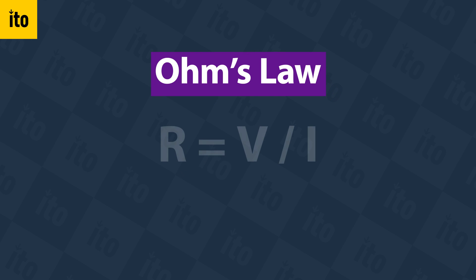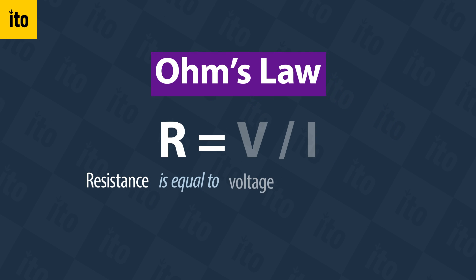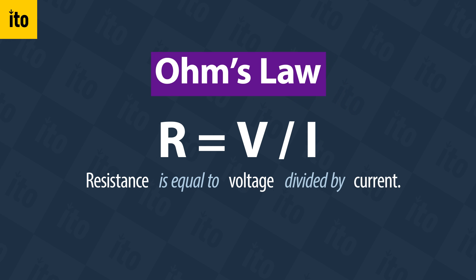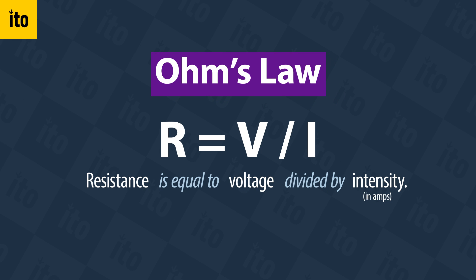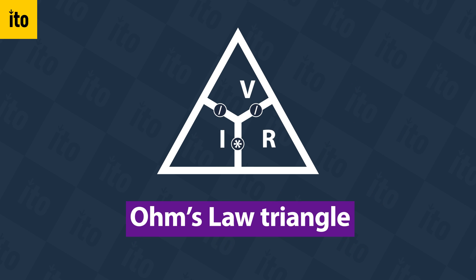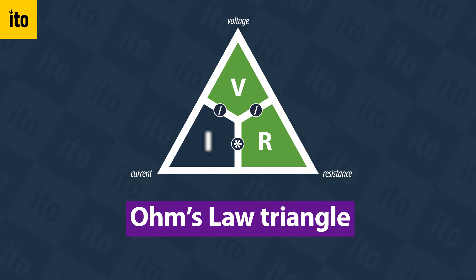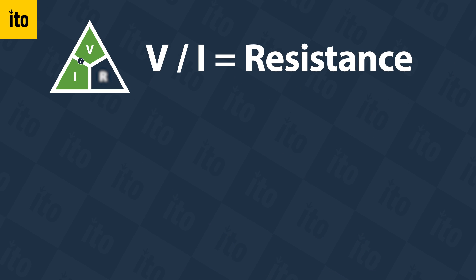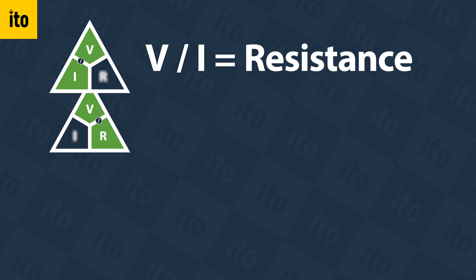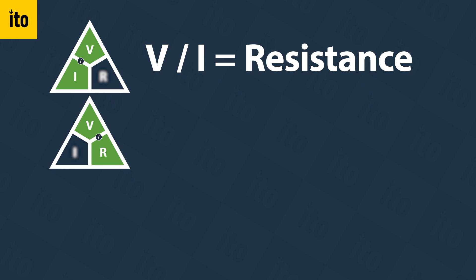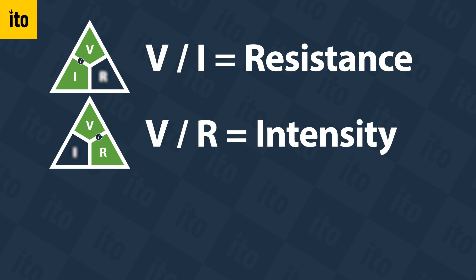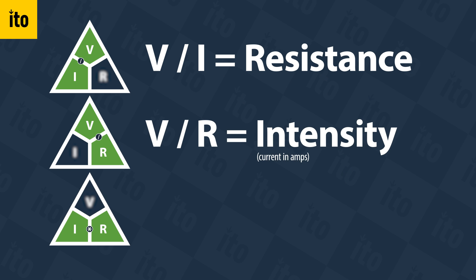Ohm's law states that the resistance R is equal to the voltage V divided by the current I flowing through. The current, with I for intensity, is denoted in amps. In other words, R equals V over I. This is Ohm's law's triangle, which visualizes that we only need to know two parts of the equation to calculate the third. Knowing the voltage and current, we can calculate the resistance. If we instead only know the voltage and resistance, we can calculate the current. And if we know the resistance and current, we can calculate the voltage.